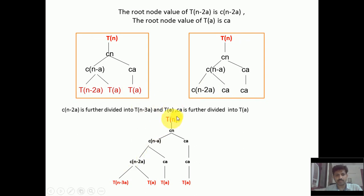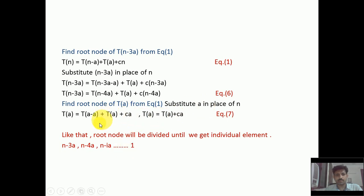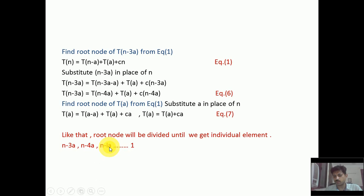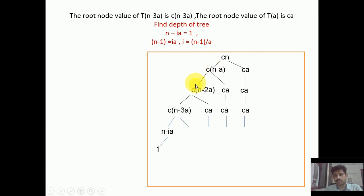The question is: how many iterations do we use to divide the root node? We divide until we reach the individual element. The root node pattern gives us n-a, n-2a, n-3a, n-4a, ..., n-ia, where i is the depth. We find the depth by setting n - i·a = 1, so i is our depth.